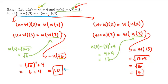Notice that u composed with w of 3 equals 10, and w composed with u of 3 equals 4 — they are not equal to each other. Even though the inputs, namely 3, are the same, the values are not. However, there is a special situation in which these values will be equal for any input, but we'll learn about that in the inverse function lessons. This is how we work with compositions. Thank you, and we'll see you next time.